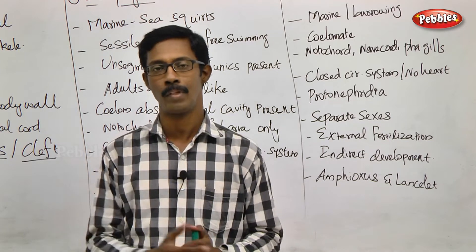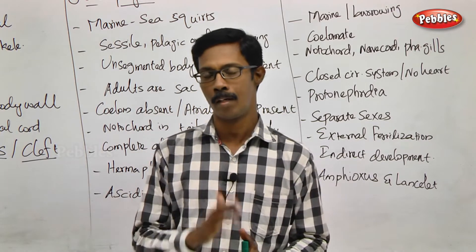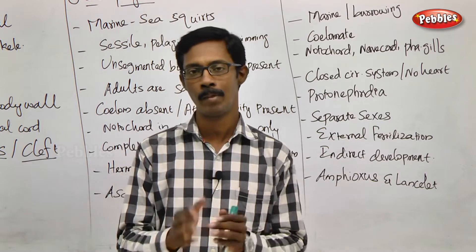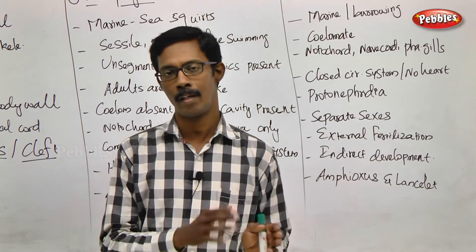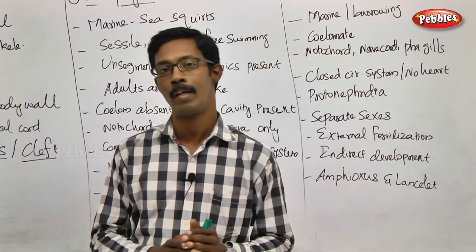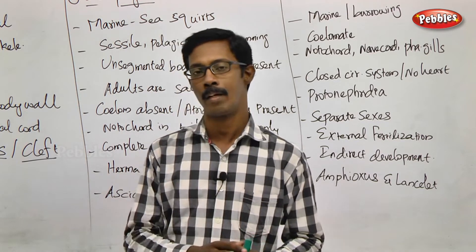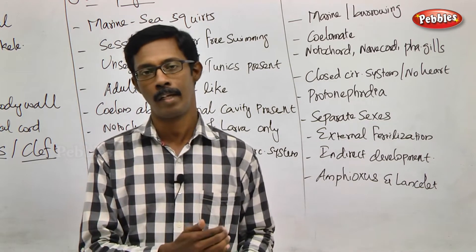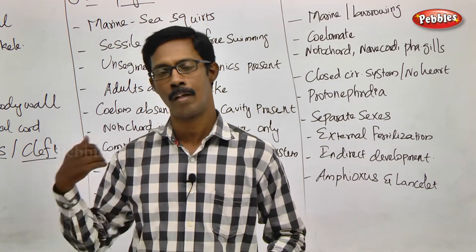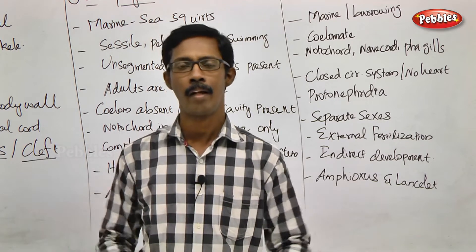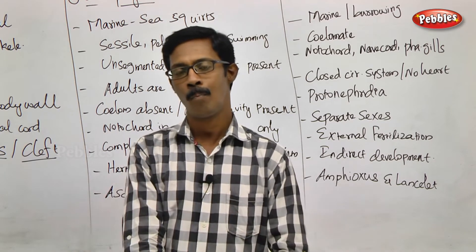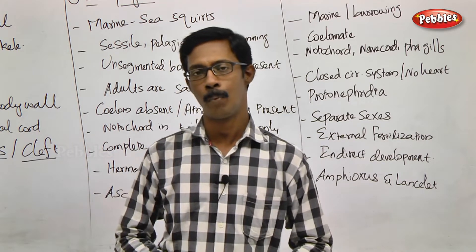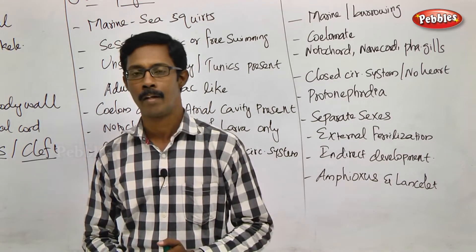So we will clarify that. Chordata is defined by three major characters. As long as an animal has these characters, we include it in chordata. Any time we look at an animal, we can see whether it belongs to chordata based on these characters.